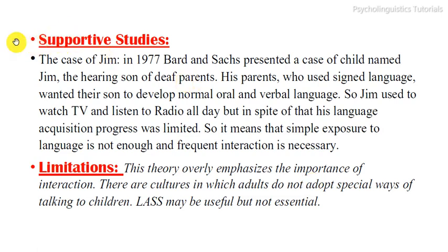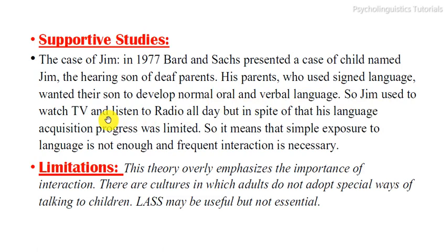Here are the supportive studies of the interactionist theory. The case of Jim — in 1977, Bard and Sachs presented a case of a child named Jim, the hearing son of deaf parents who used sign language. His parents wanted their son to develop normal oral and verbal language, so Jim used to watch TV and listen to the radio all day. But in spite of that, his language acquisition progress was limited. This means simple exposure to language is not enough — frequent interaction is necessary.